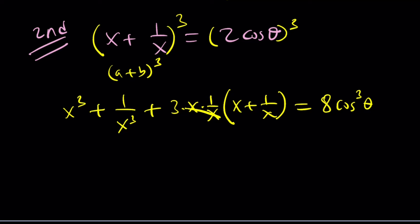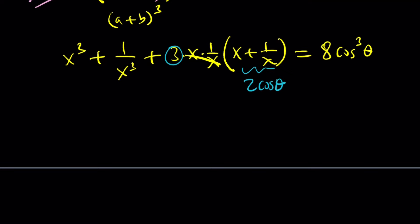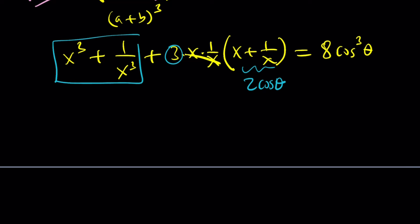We know x plus 1 over x is 2 cosine theta, don't we? So, this is 2 cosine theta multiplied by a 3, and this is what we're looking for. So, let's isolate it.